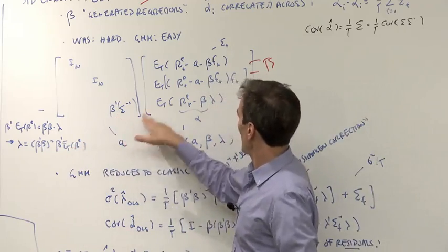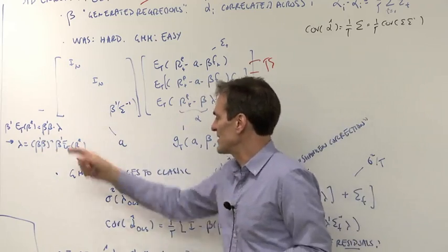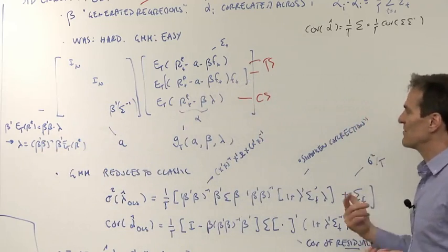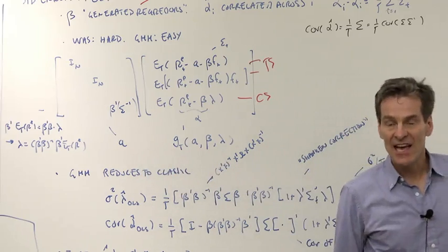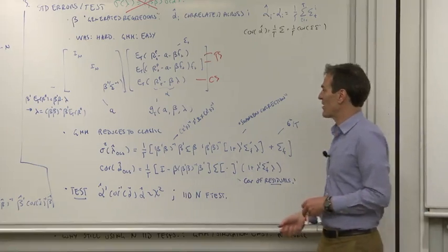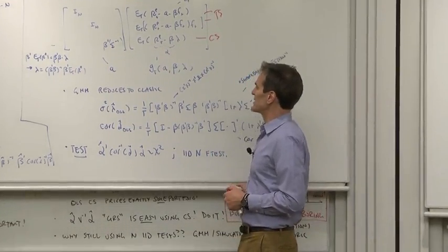Here, beta prime expected return equals beta prime beta lambda. That's the OLS regression that defines lambda. So we've got our A, we've got our GT, and now it's just a pleasant hour of working out algebra to get the GMM formulas for standard errors and the test statistic.